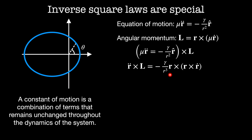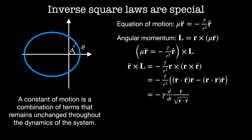I'm going to expand this vector triple product using the back-cab rule, which gives us minus gamma divided by r cubed equal to r dot r dot times r minus r dot r times r dot. It turns out that this term is a total derivative, so we'll use our favorite trick and undo the chain rule, and we find that this is equal to minus gamma times the rate of change of the vector r divided by its magnitude — which is just minus gamma times the rate of change of r-hat.